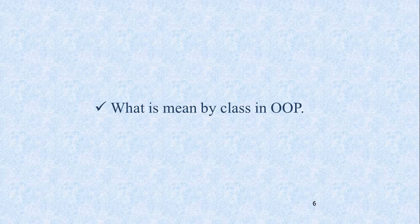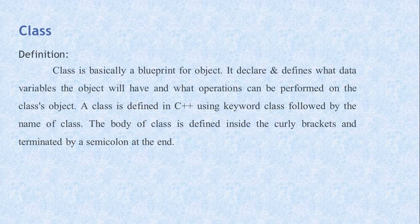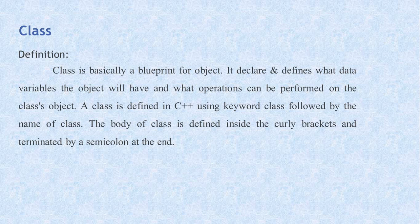Now we see today's lecture topic — what is meant by class in OOP. Basically, a class is a blueprint for objects. It declares and defines what data variables the object will have and what operations can be performed on the class object. A class is defined in C++ using the keyword 'class' followed by the name of the class. The body of the class is defined inside curly braces and terminated by a semicolon at the end.